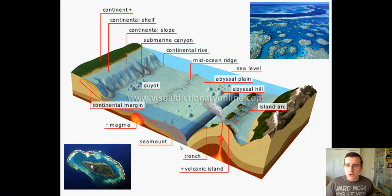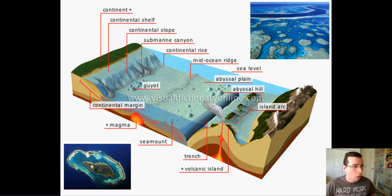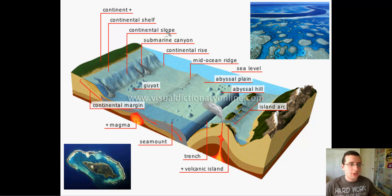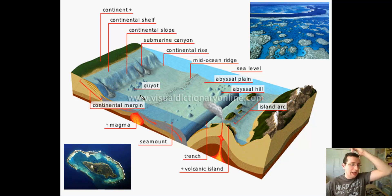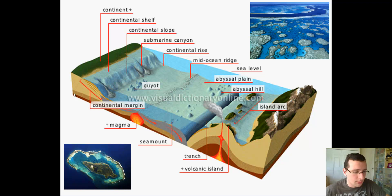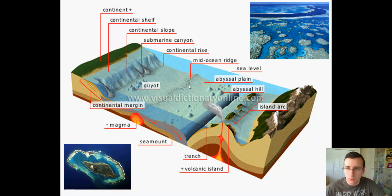Now let's talk about the structures of the ocean floor. The continental margin — the part of the continent that's underwater — splits into three different parts: the continental shelf, the continental slope, and the continental rise, as shown in the top left-hand corner. The first most prominent feature of the continental margin is the continental shelf.